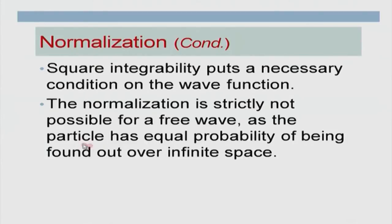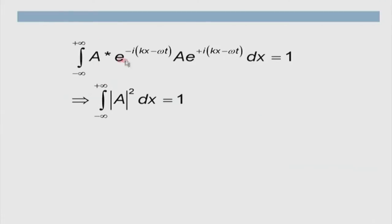Let me give a particular example. Assume the wave function of a particle at t = 0 is given by ψ(x) = e^(−x²/a²). I am not concerned here whether this solves the Schrödinger equation; I am just using it to illustrate the concept of probability.